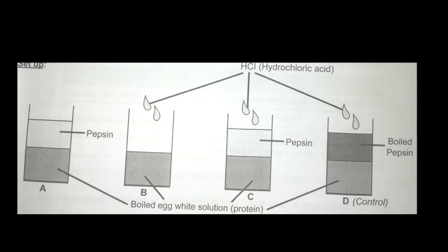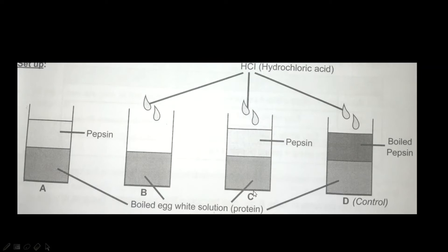In test tube A you have pepsin plus your boiled egg white solution. In test tube B you have your boiled egg white solution plus hydrochloric acid. In test tube C you have your boiled egg white solution, pepsin, and hydrochloric acid. In test tube D, your last test tube which is the control, you have your boiled egg white solution, boiled pepsin, and hydrochloric acid.